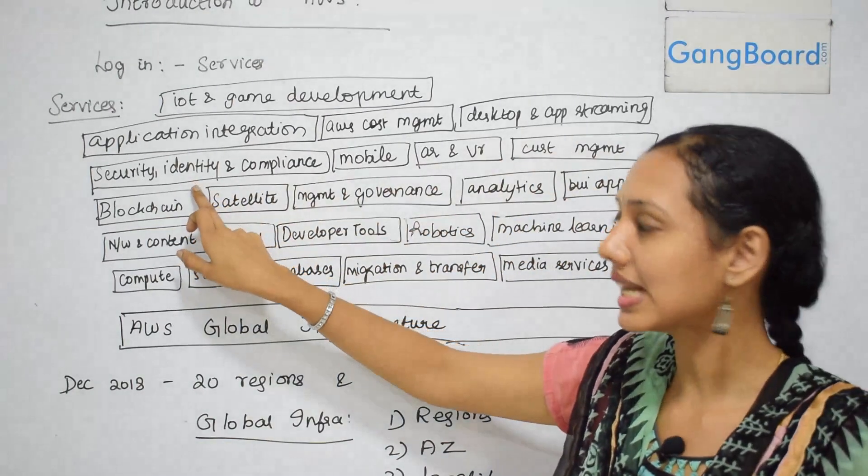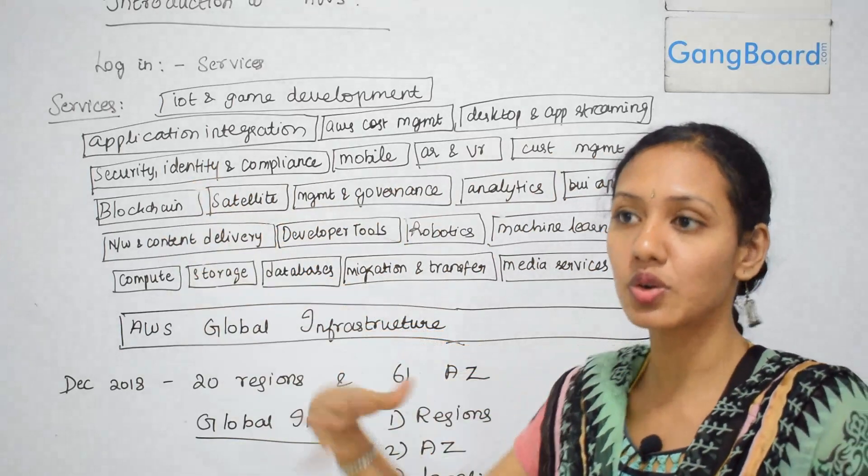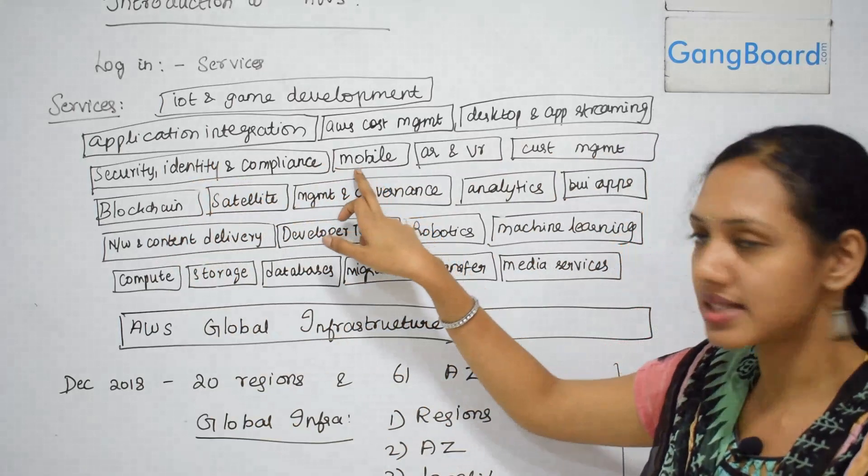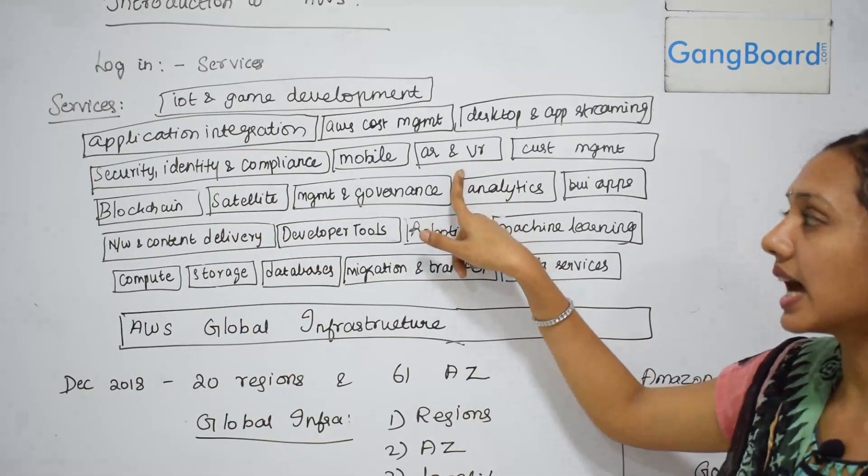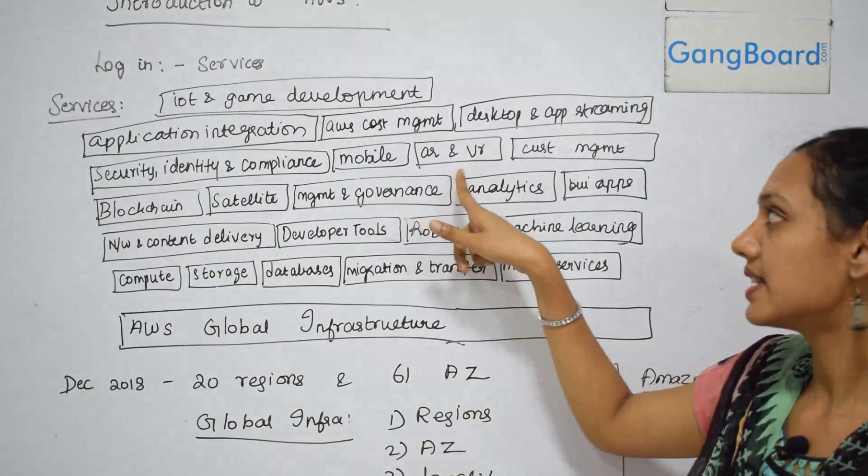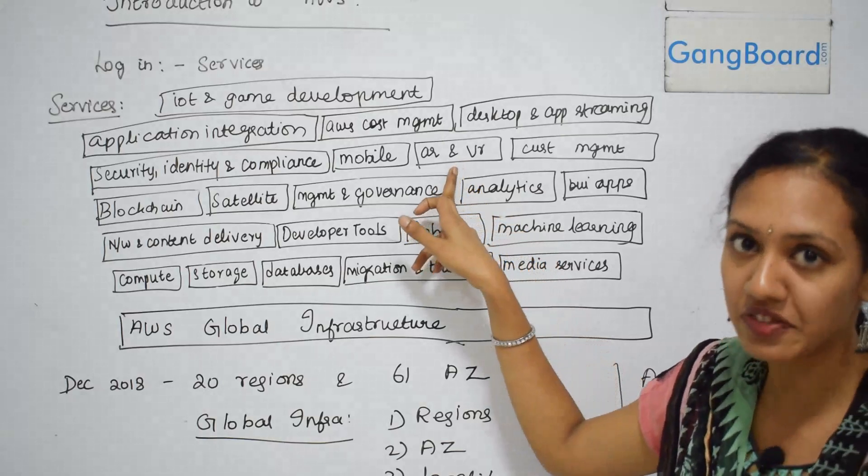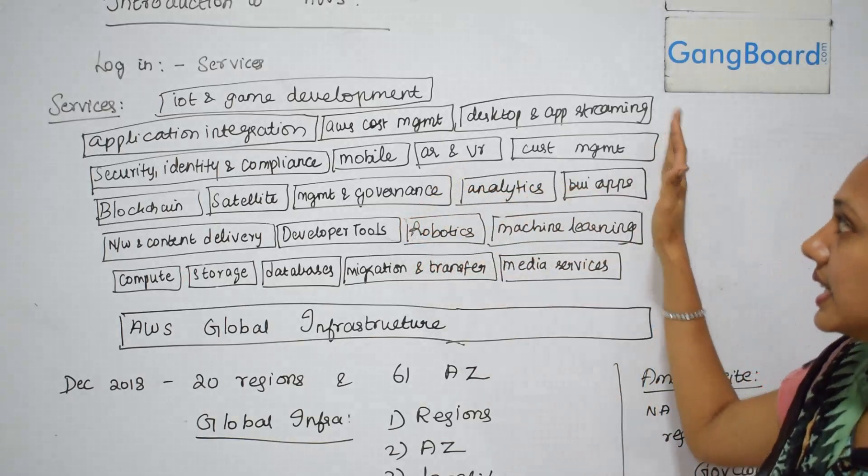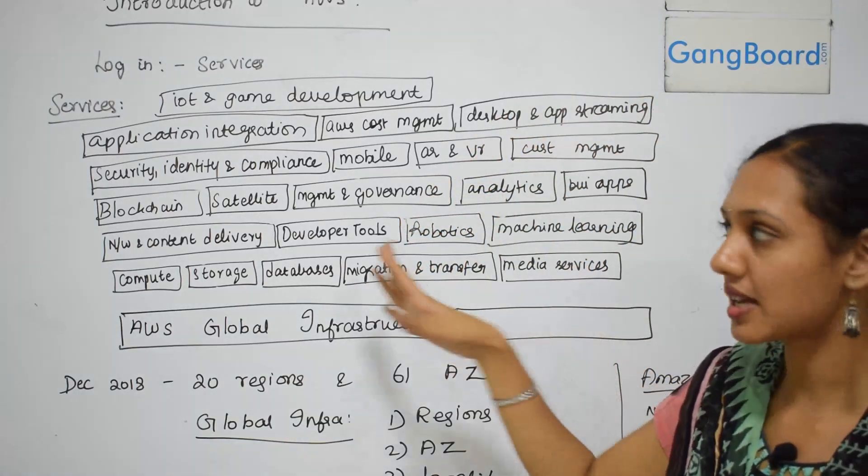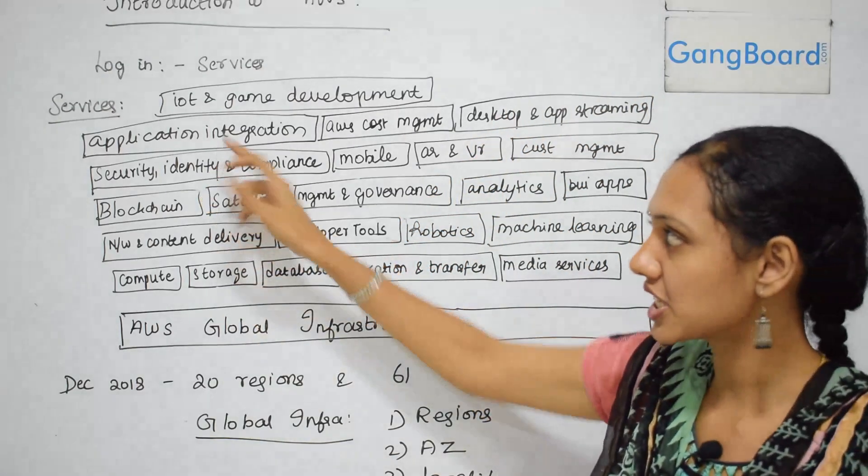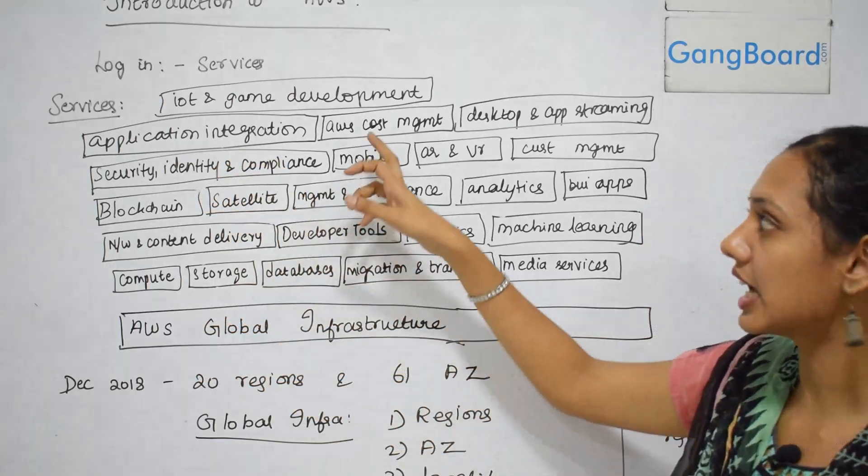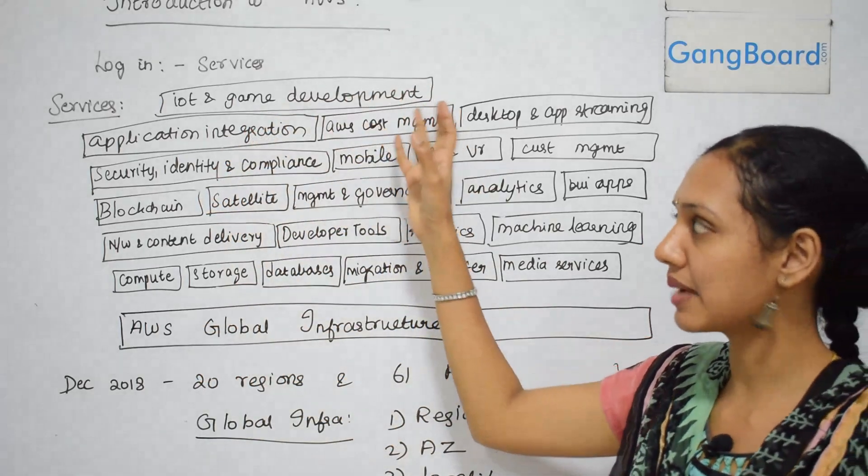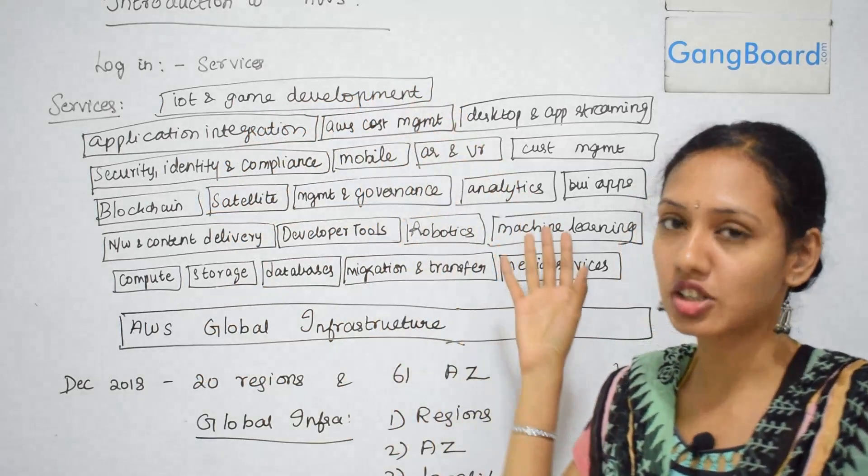We have management and governance services, analytics and data services, business apps, and then security identity and compliance like how you manage users within your AWS account. Then mobile services, AR and VR—augmented reality and virtual reality—then customer management services, desktop and app streaming services.